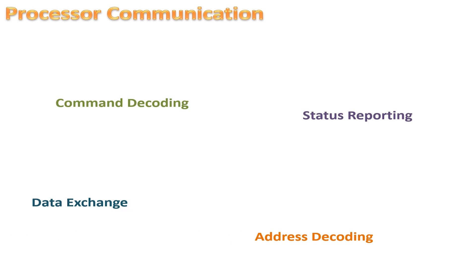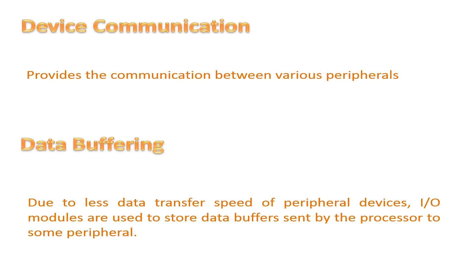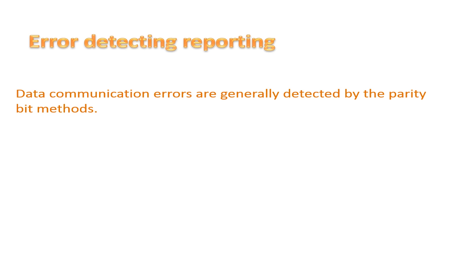Address decoding: each peripheral connected to the system has a unique address, and the input-output model recognizes the address of each peripheral. Device communication: the input-output model also provides communication between various peripherals, like status reporting. Data buffering: as peripherals have very low data transfer speed compared to the processor, data buffers within the input-output model store data sent by the processor to peripherals before it is transferred. Error detecting and reporting: the input-output model detects errors and reports them to the CPU. Errors can include paper jam in the printer or detection of changed bits. Data communication errors are generally detected by the parity bit method.